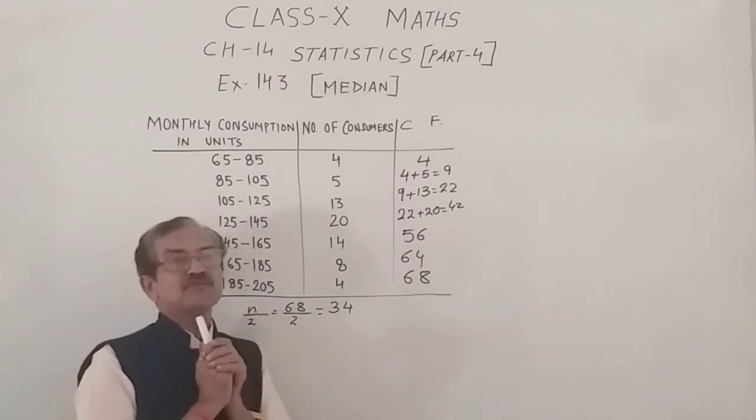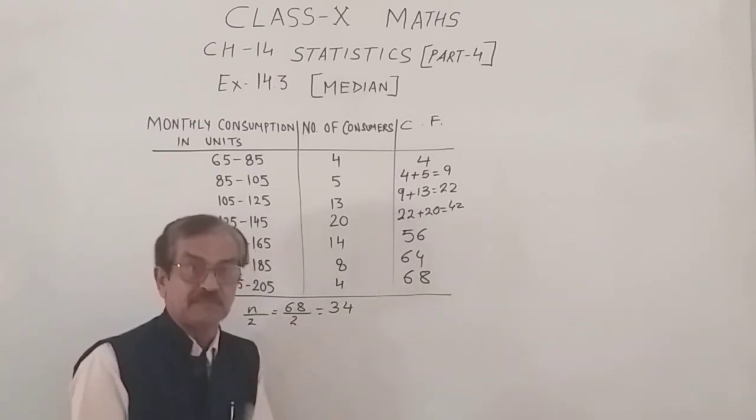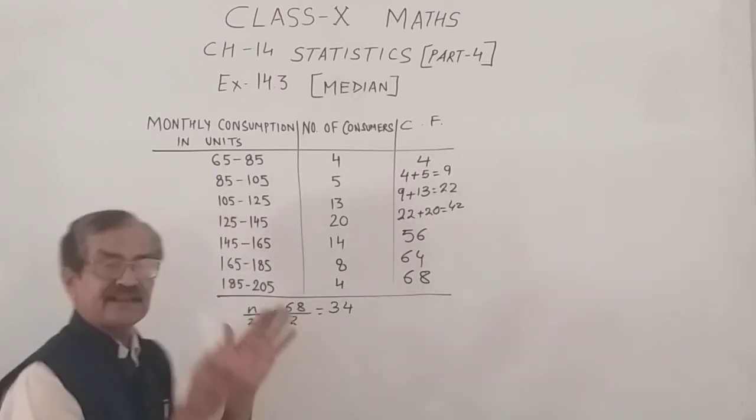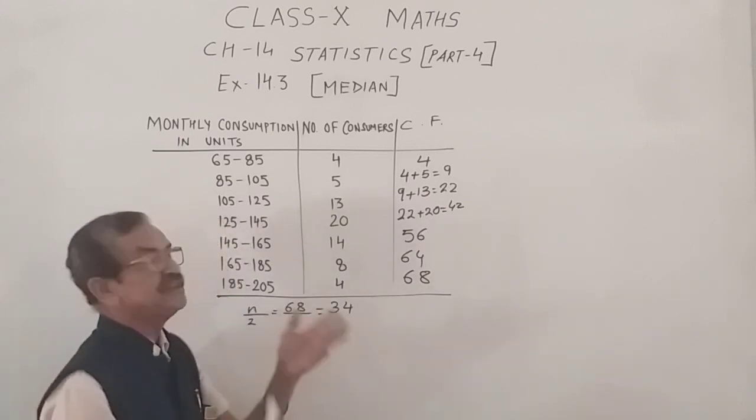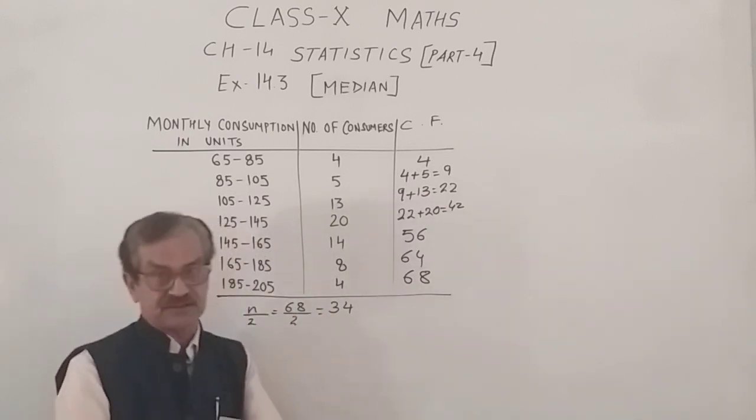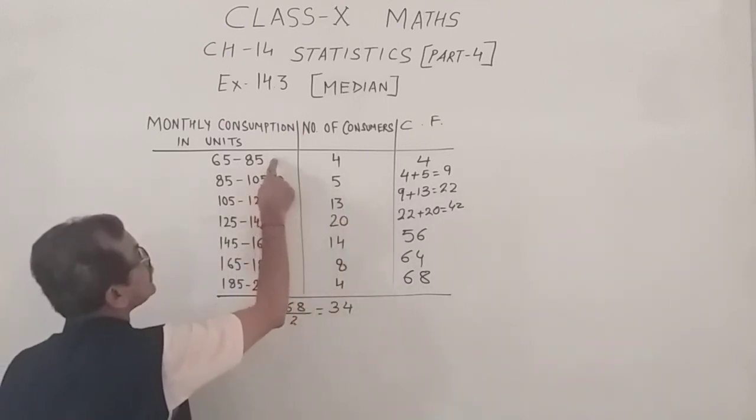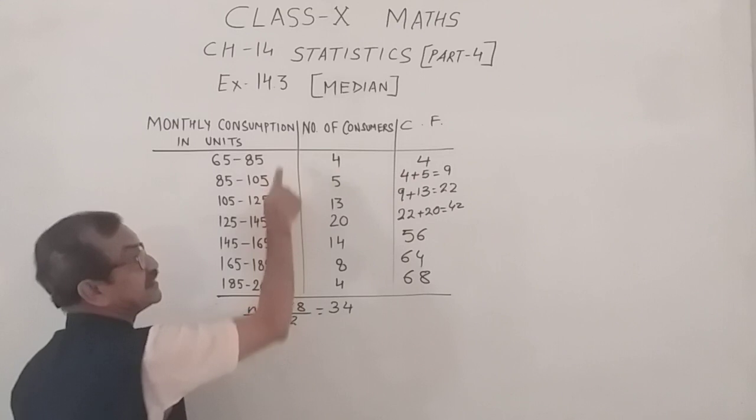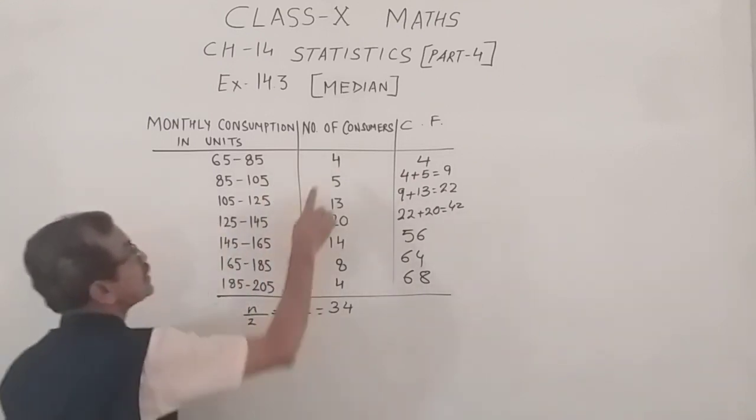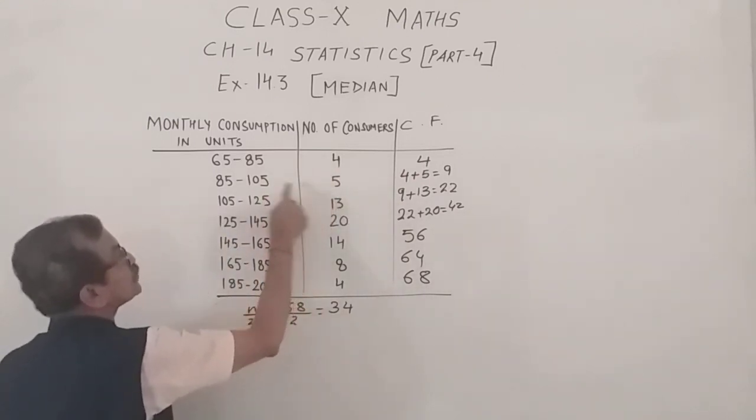Meaning, I am going to find out the 34th term. Since the raw data is not available, the 34th term cannot be established. However, from here we can conclude that the first 4 terms belong to this class, since it is in the ascending order. And the next 5 terms belong to this class.